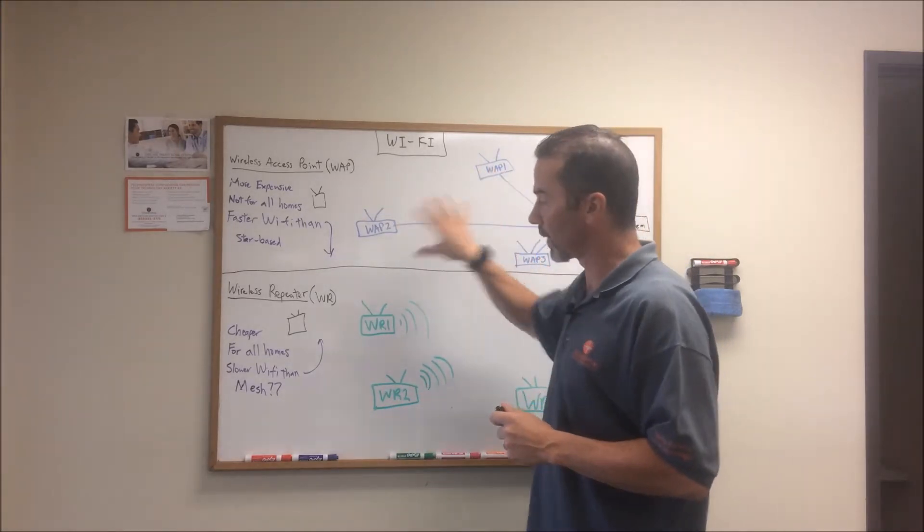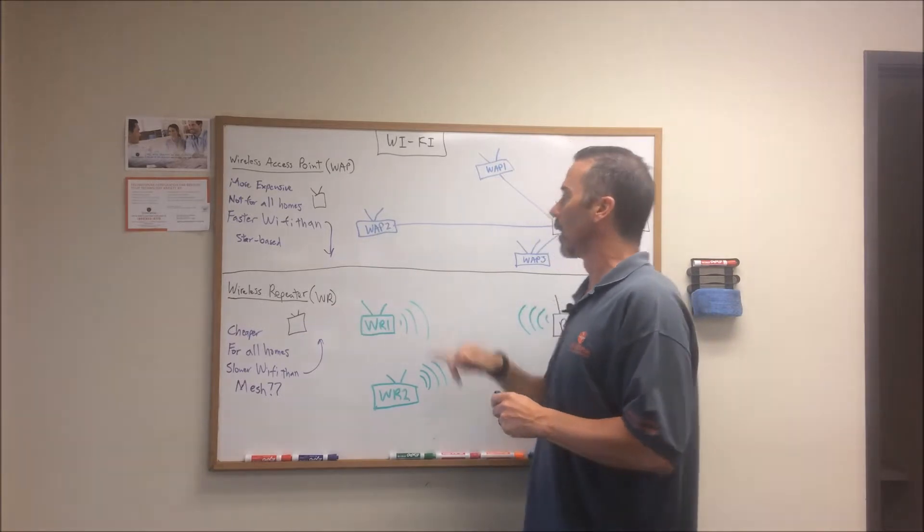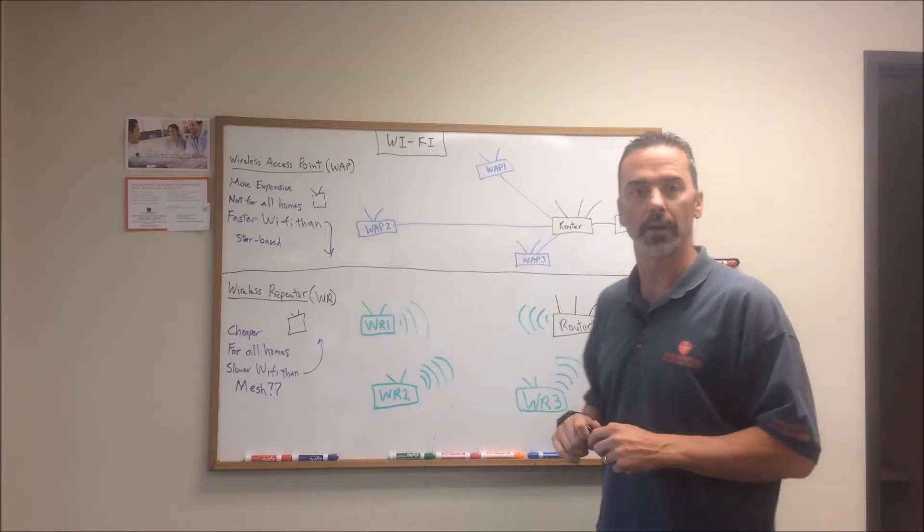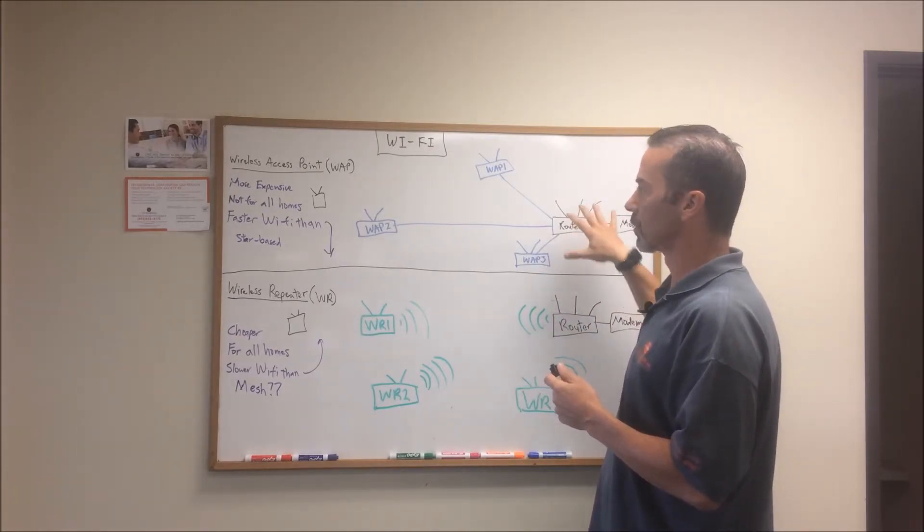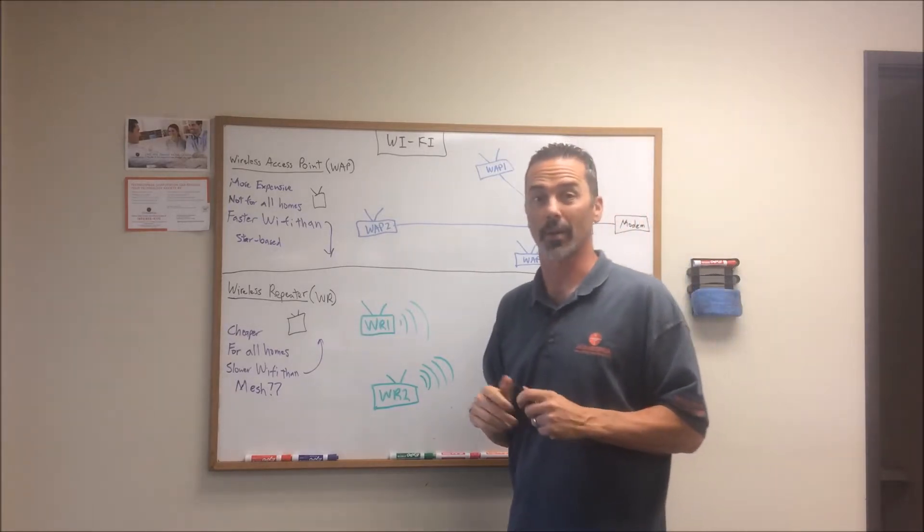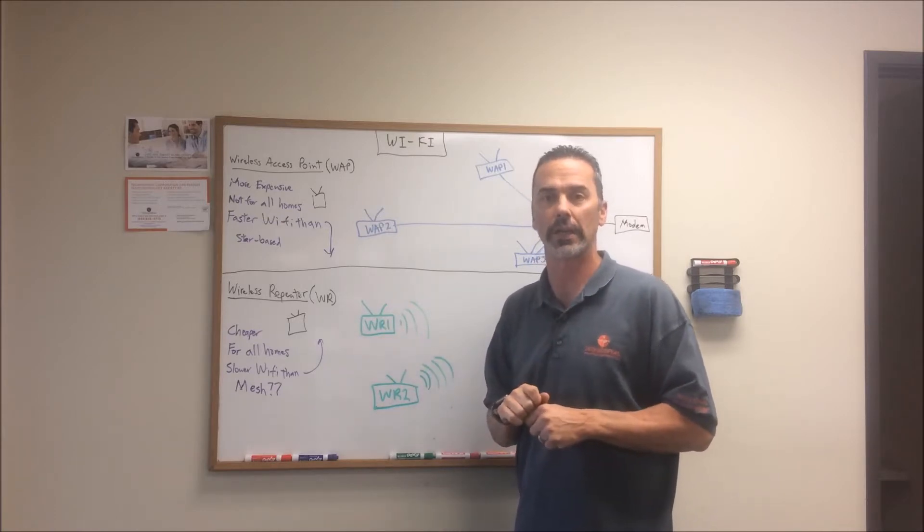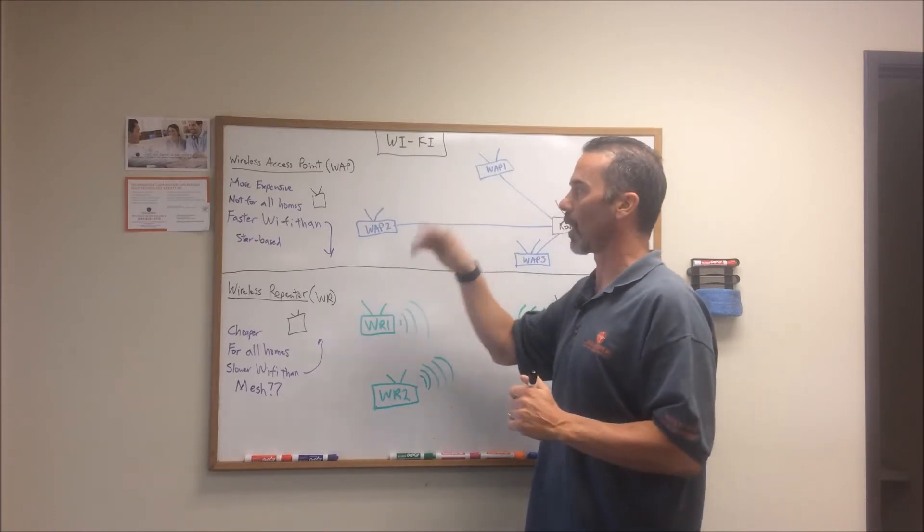The gear is much more expensive than the wireless repeater. Each one of these access points is going to run probably $150 to $300, and including kind of an enterprise-grade router, you're probably talking $700 to $800 in gear alone, never mind all the wiring or setup.